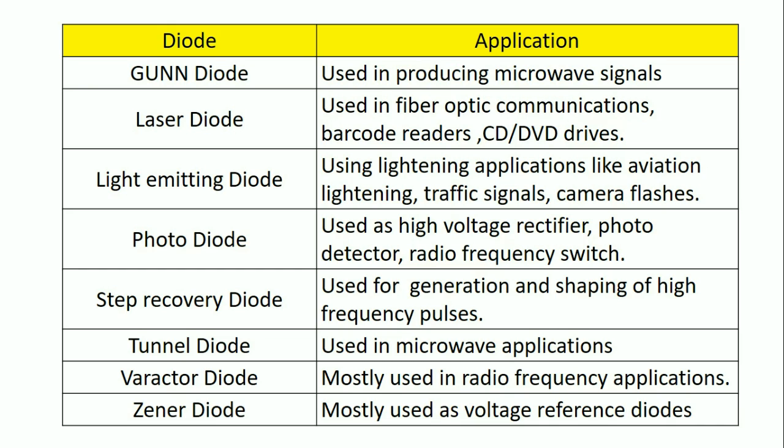The tunnel diode is used in microwave applications. And the varactor diode is mostly used in radio frequency applications.